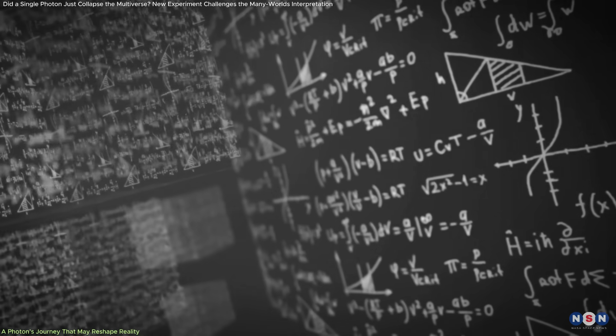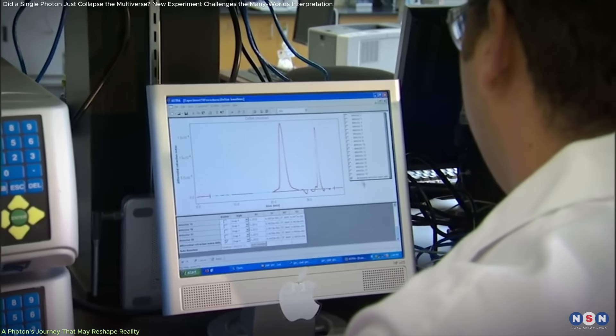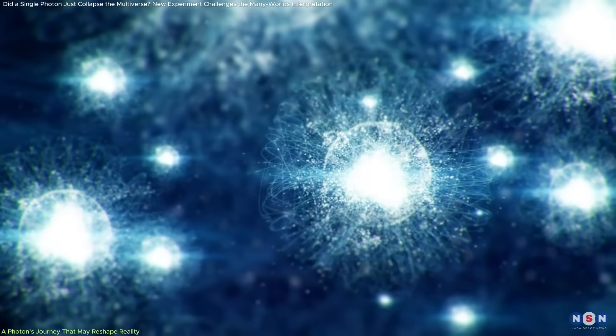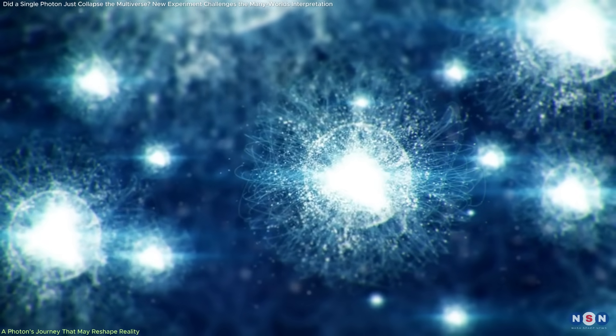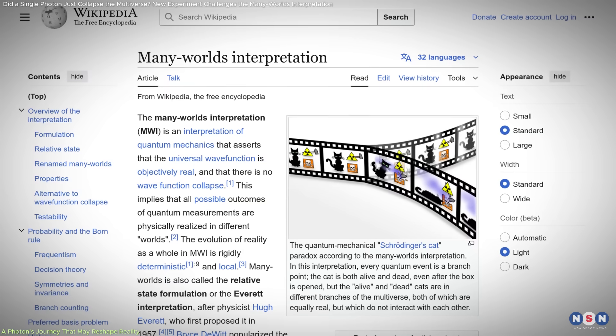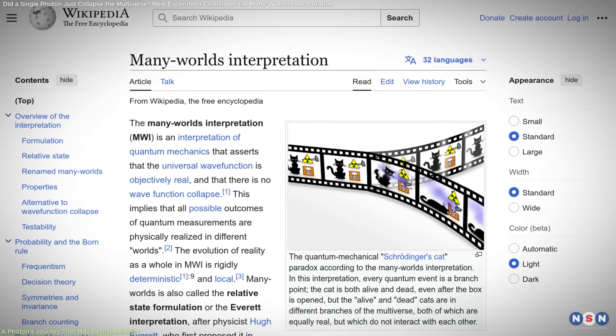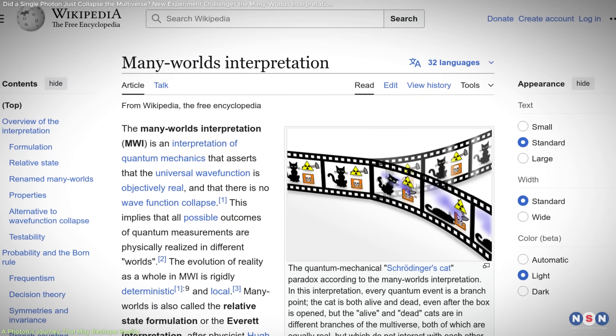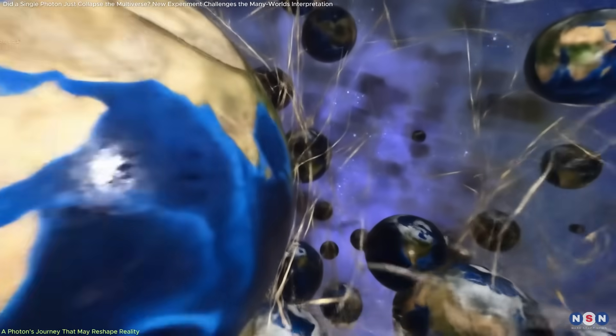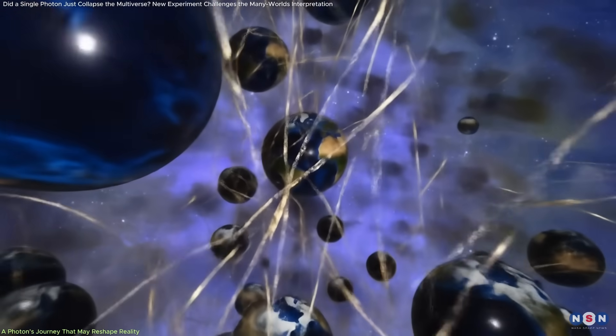For decades, quantum mechanics has amazed scientists with its strange predictions, especially when it comes to particles like photons. One bold explanation, the many worlds interpretation, claims that every possible outcome happens in its own parallel universe.